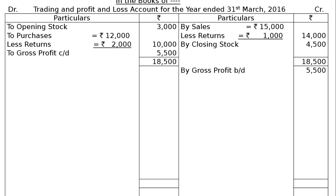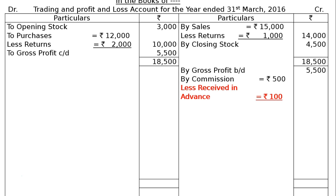All other income items will be on the credit side. There will be commission Rs 500. In adjustment part 2, Rs 100 was received in advance for the next year. Income received in advance is a liability — we have not done the work but are receiving the money. Hence, less received in advance Rs 100. In the final column, the commission earned actually is Rs 400. Commission received in advance Rs 100 will be written under current liabilities in the liabilities side of the balance sheet.